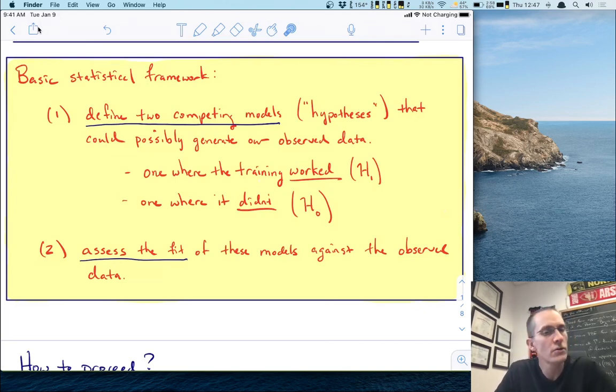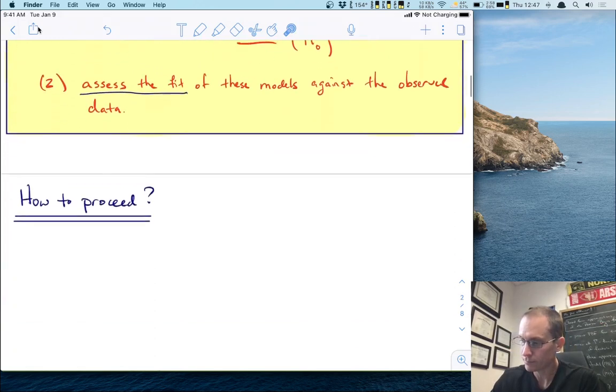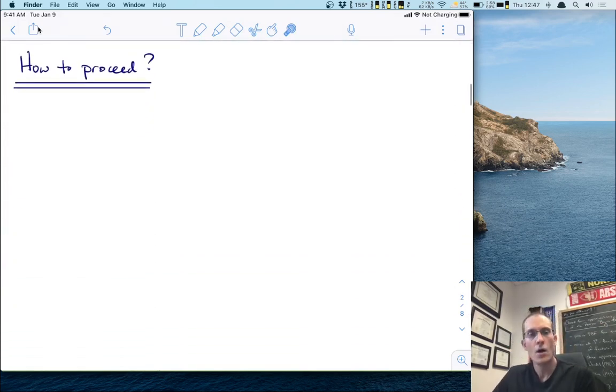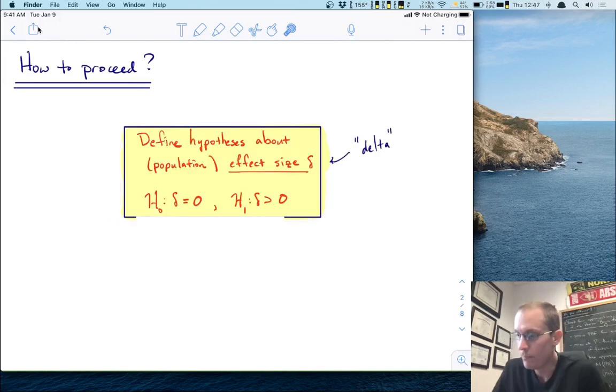And then what we want to do is assess the fit of these models against the observed data, which is the better predictor of the data we observe, and we use that result to then make a conclusion about the effectiveness of this training program. So how do we proceed? Well I want to actually show you two possible paths that we could take. The first path will be very familiar to you. But let's start by defining our hypotheses. So what we're going to do today is we're going to define hypotheses about the effect size delta. That little greek letter there delta is one that we'll use a lot when we're talking about Bayesian hypothesis testing.